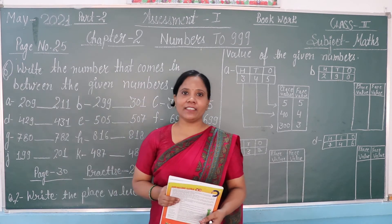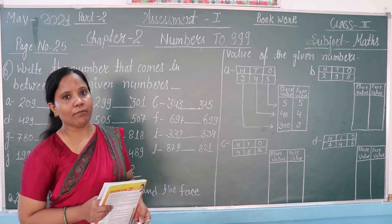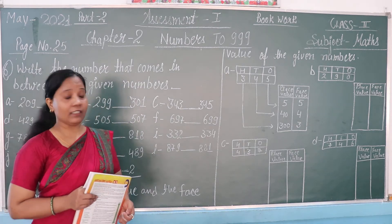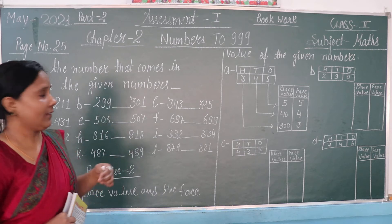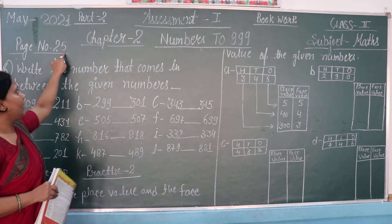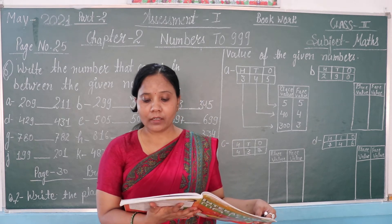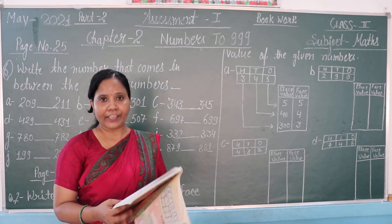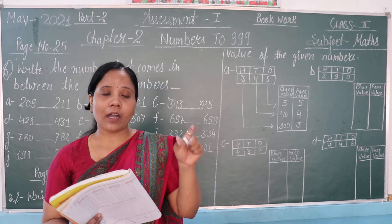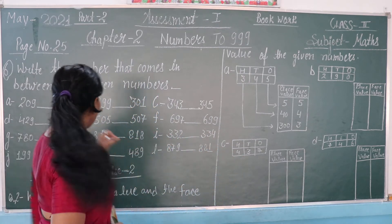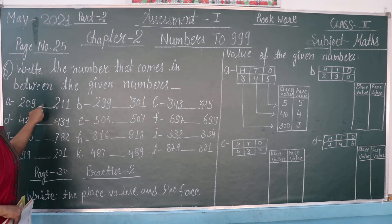Good morning students, welcome to online class. Today's video is for Class 2, subject Maths, Chapter 2: Numbers to 999. In the previous video we completed the exercise for this chapter. Today we will go ahead. Look at page number 25, question number 6: write the number that comes in between the given numbers. The question is saying you have to write the middle number between two numbers.